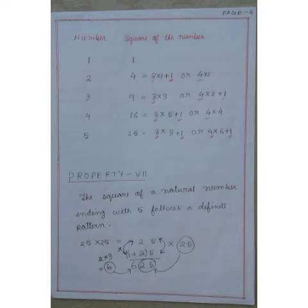Let us write numbers 1, 2, 3, 4, 5 in one column and the square of the numbers in another column. Number 1, the square of 1 is 1.